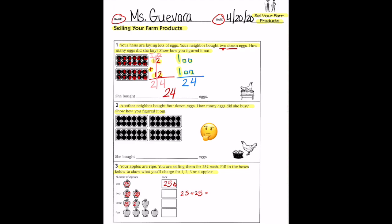Then you're going to get 25 cents for each of the three apples. That's 25, 25, 25. And for four apples you're going to get 25 four times.